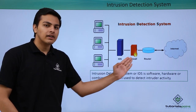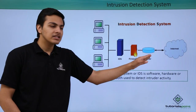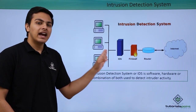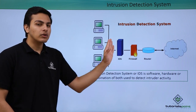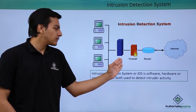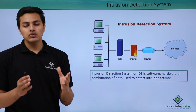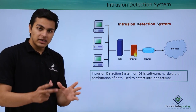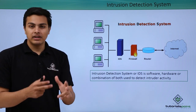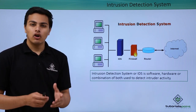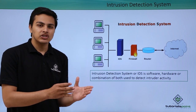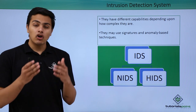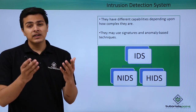Here you can see our local area network, our IDS system, our firewall router, and the internet. Any request from the internet going into our local area network will have to pass through IDS, and any request going out from our local area network also has to pass through IDS. Intrusion detection and prevention systems can be hardware, or a combination of hardware and software, which we can deploy on our network and web applications.